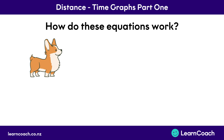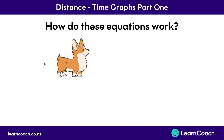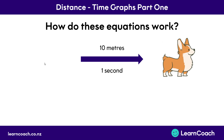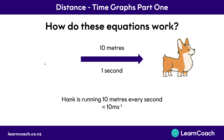So first off, what is the relationship between speed, distance and time? To show this we've got our friend Hank. Let's say Hank starts in one position and moves across the screen. He's travelled 10 metres and it's taken him 1 second. If I ask you how fast Hank is going, you'd say he covered 10 metres every second — that is, 10 metres per second, which is a speed.